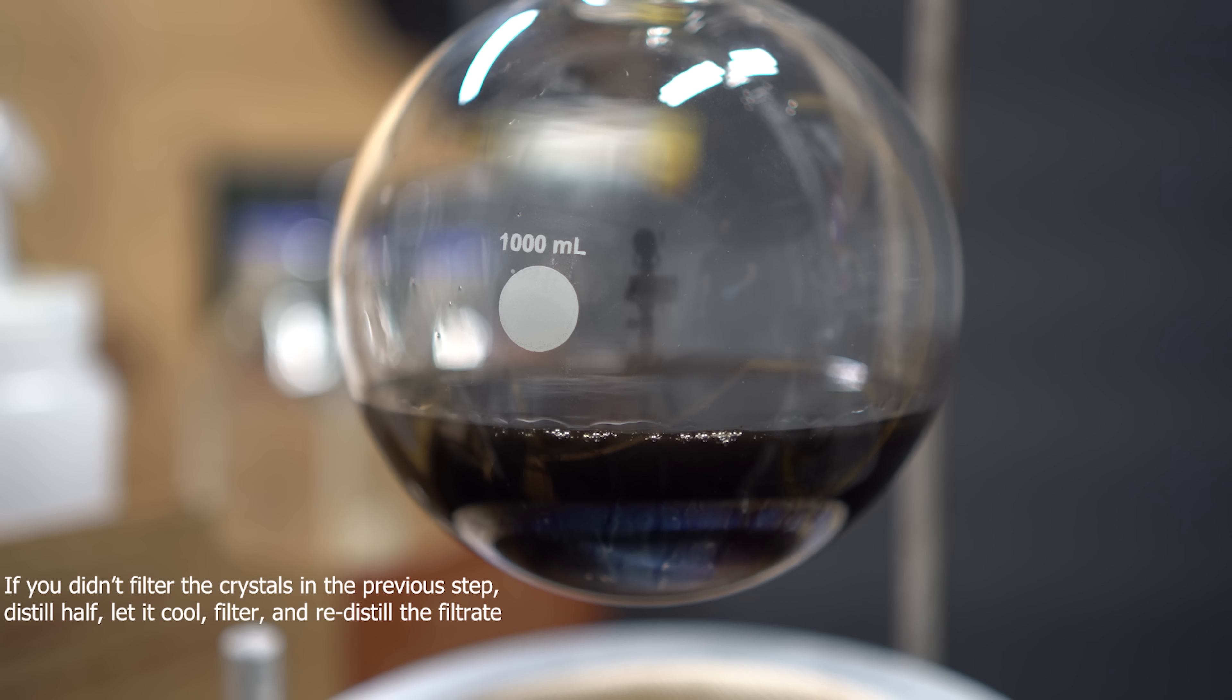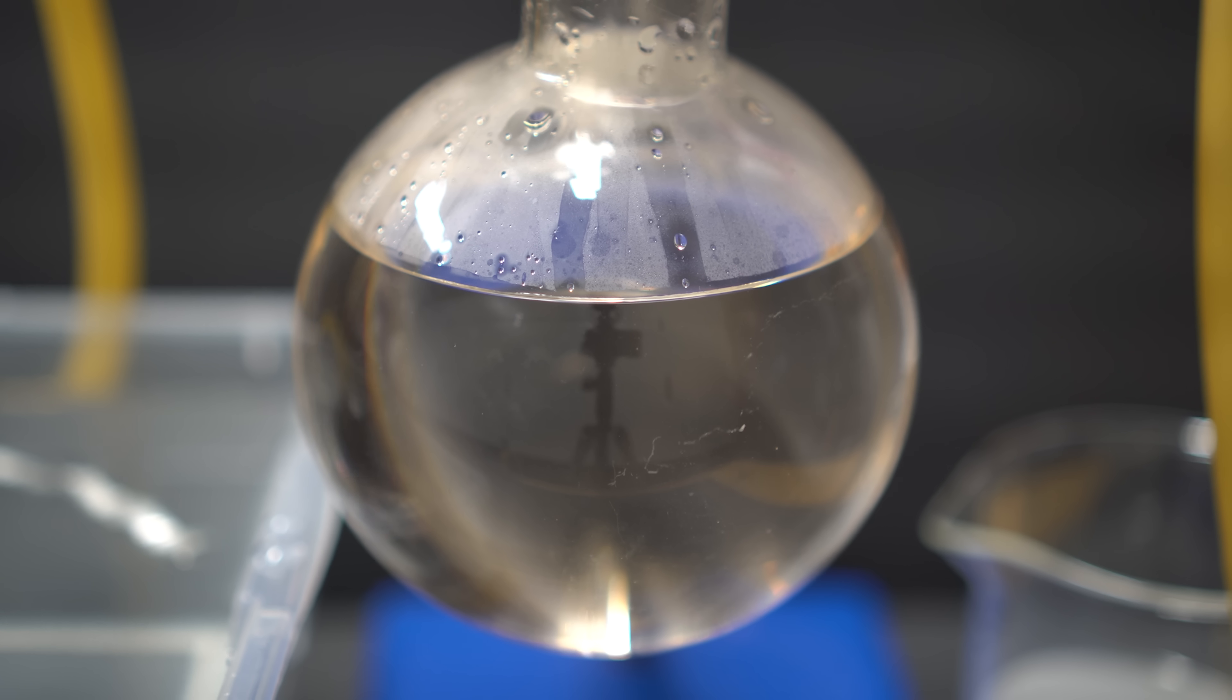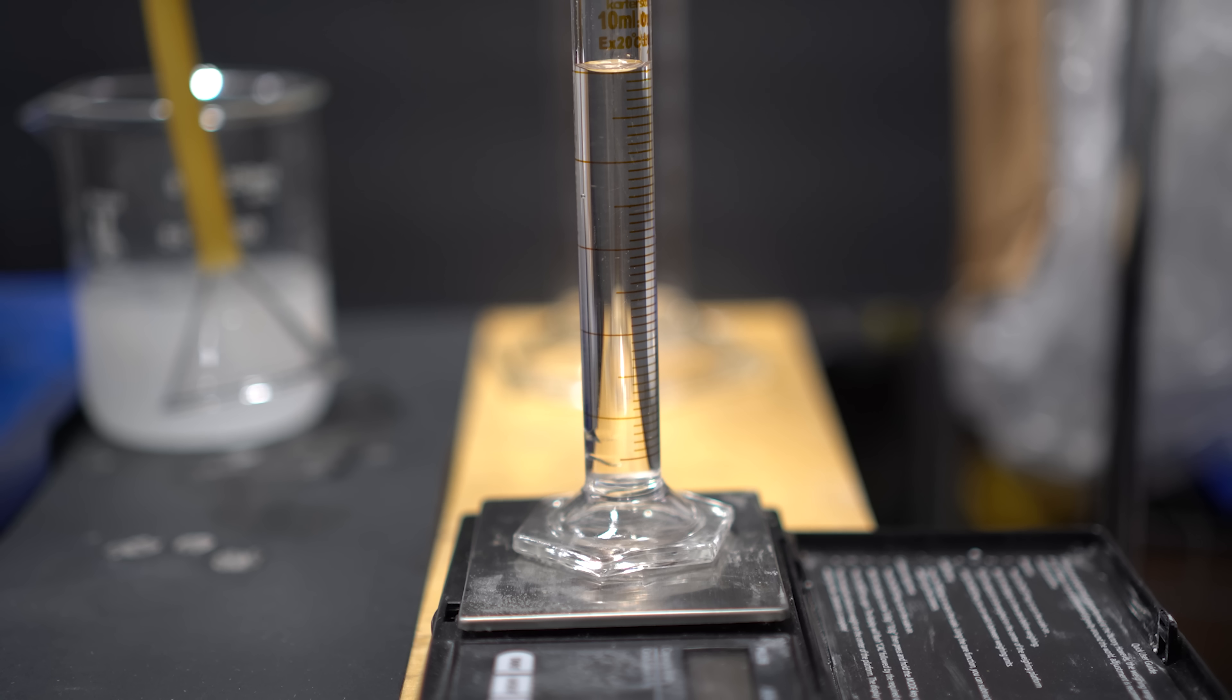When no more distillate was coming over, I turned off the distillation, and I let everything cool down. When it was all said and done, we had a very light orange solution. This is our hydrobromic acid, and it's very slightly tainted with some elemental bromine.